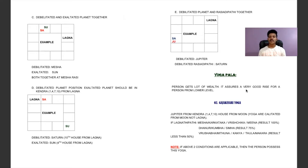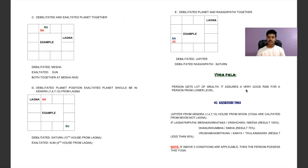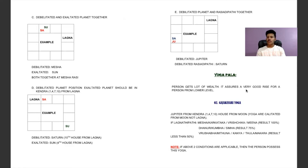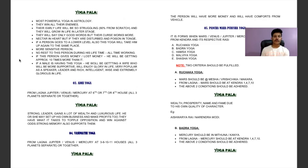The yoga phala (result) of Neechabhanga Raja Yoga: the person gets a lot of wealth and a very good rise from a lower level. Karma also matters a lot, keep that in mind. Now coming to Gajakeshara Yoga: Jupiter should be in a Kendra (1st, 4th, 7th, or 10th house) from the Moon. Yogas are calculated from the Moon, not the Lagna. If the Lagna lord is Aries, Cancer, Scorpio, or Pisces, results will be 100%.